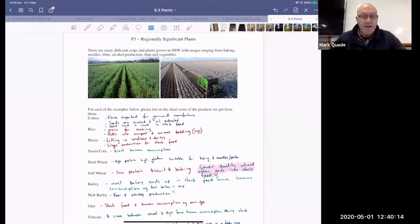Okay, so ladies, we're looking at P3, regionally significant plants. Obviously, agriculture in New South Wales, in Australia, there's a lot of plants grown, so many different crops, so many different uses. So this whole dot point is about getting you guys thinking about all of the stuff that gets grown and where it ends up.